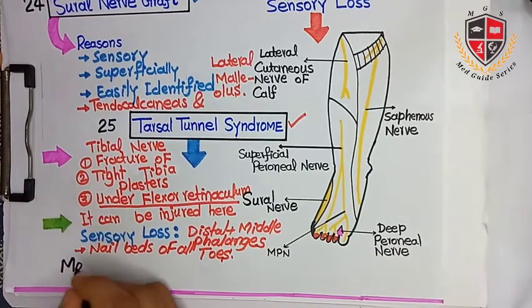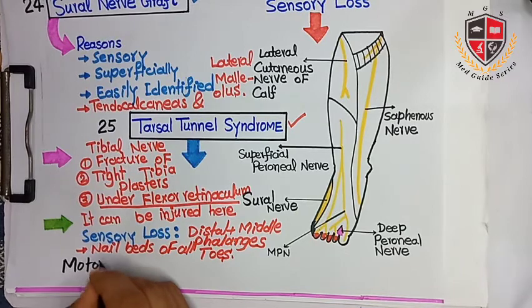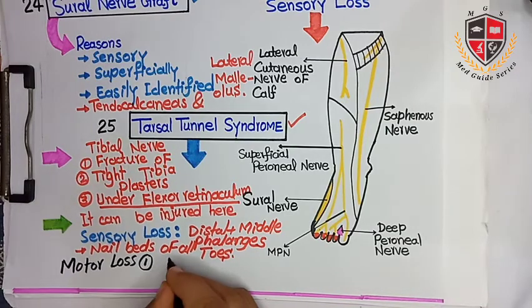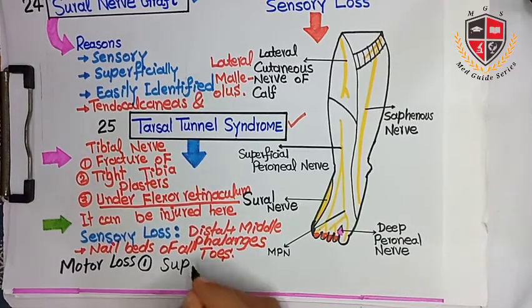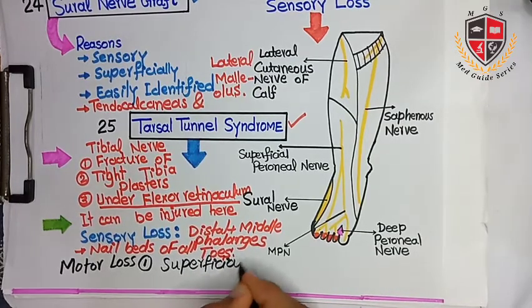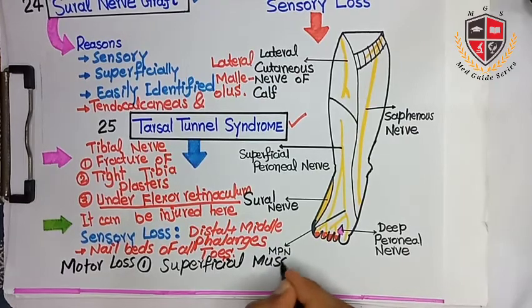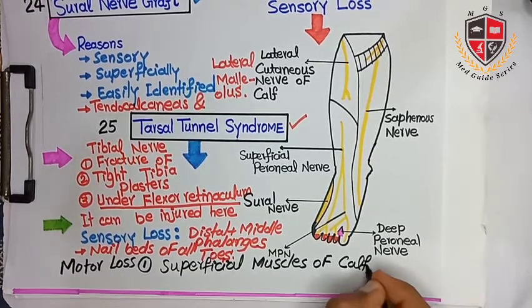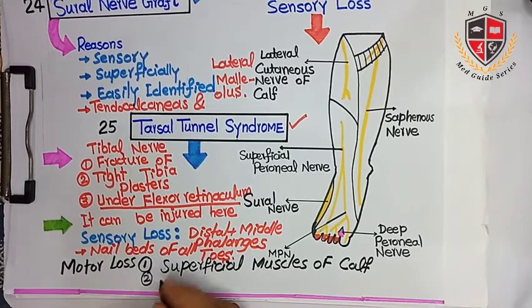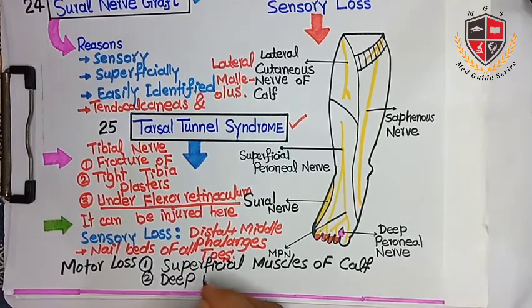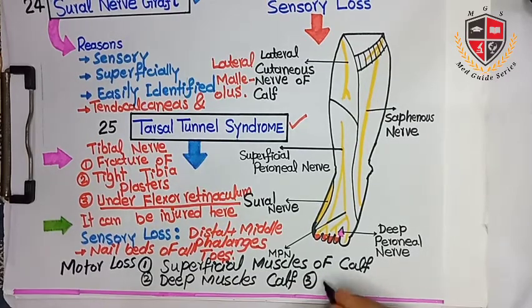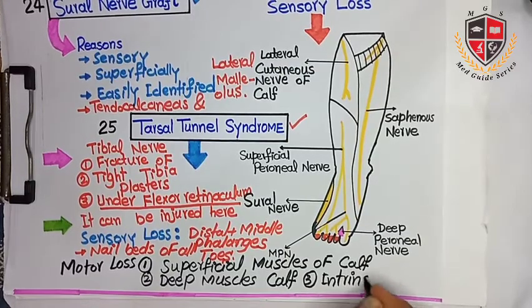The tibial nerve injury under the flexor retinaculum also causes motor losses. These motor losses affect the superficial muscles of the sole, the deep muscles of the sole, and the intrinsic muscles of the sole.